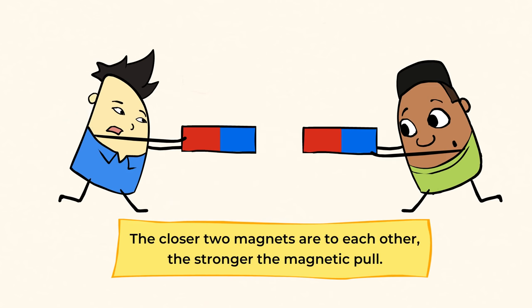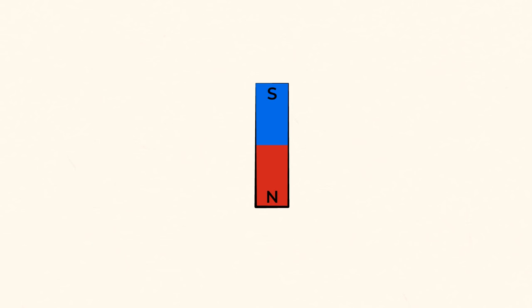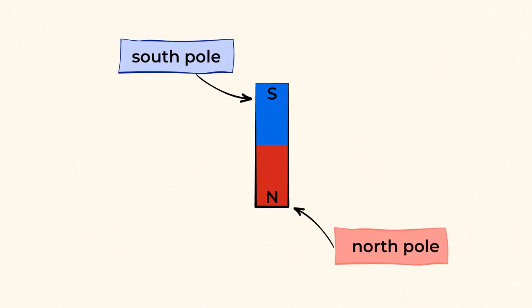But once you separate the magnets, pulling them apart becomes much easier. Take a look at this magnet. All magnets have a north and a south pole. The N that you see here shows the north pole of the magnet. The S shows the south pole.